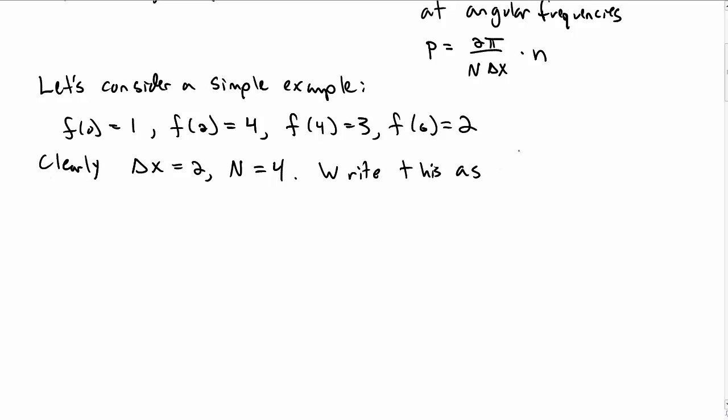By the way, we would write this not as we have above, but in order to do the discrete Fourier transform, we'd call that f0 is 1, f1 is 4, f2 is 3, and f3 is 2, just labeling each point by the integer 0, 1, 2, 3.